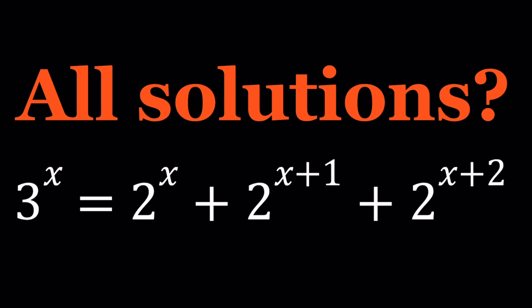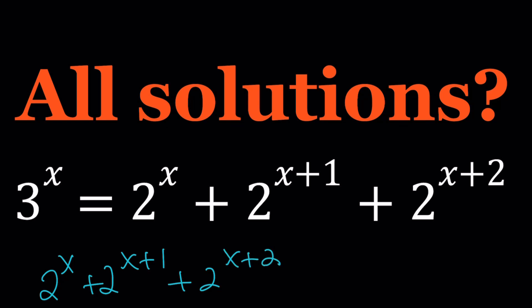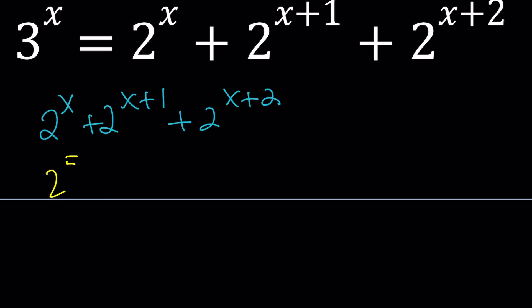Whenever you have an expression like 2 to the x plus 2 to the x plus 1 plus 2 to the x plus 2, this could also come in numerical form — such as 2 to the 5 plus 2 to the 6, or more fun: 2 to the power of 50 plus 2 to the power of 51 plus 2 to the power of 52. You can estimate it by looking at 2 to the power of 10 to the power of 5.